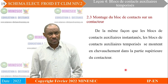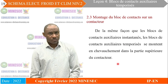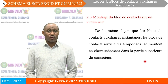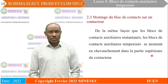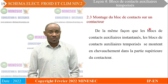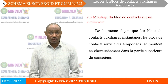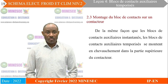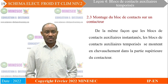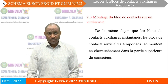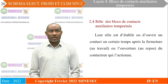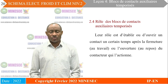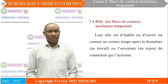Après avoir réglé la temporisation souhaitée, il est question de monter ces blocs dans un chemin ou un circuit existant. De la même façon que les blocs contacts auxiliaires instantanés, les blocs auxiliaires temporisés se montent toujours en chevauchement au-dessus de la partie supérieure du contacteur. La partie supérieure du contacteur a toujours des provisions pour accueillir soit des blocs instantanés, soit des blocs auxiliaires temporisés.